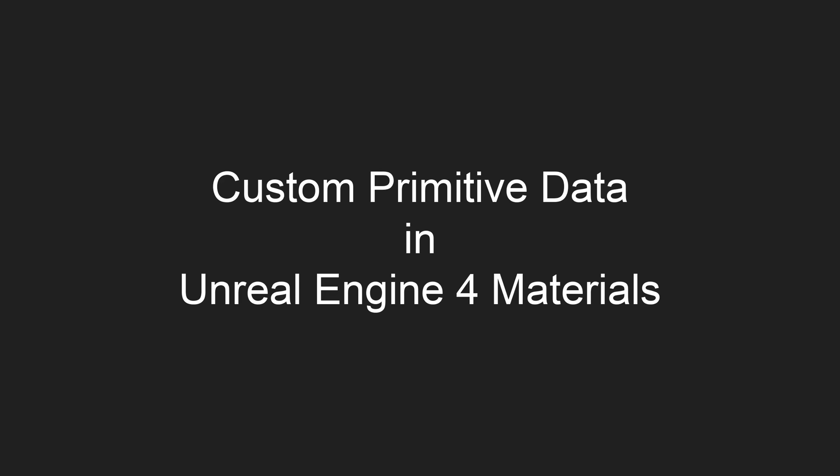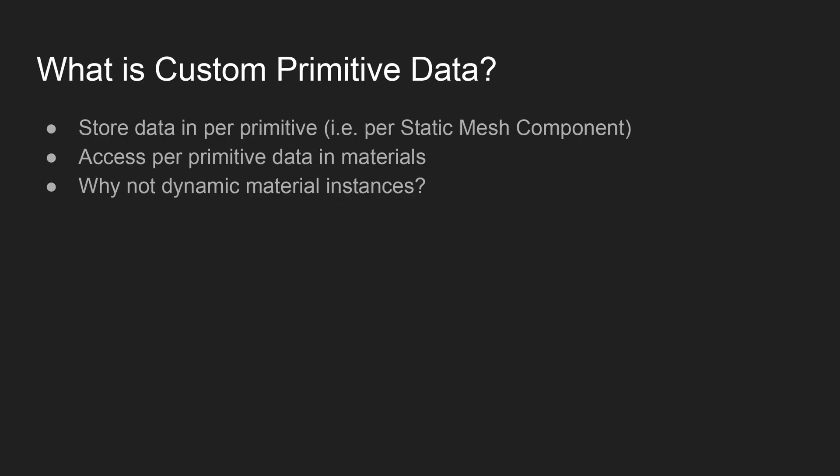This video is about custom primitive data in Unreal Engine 4 materials. This feature is new in Unreal Engine 4.23. Custom primitive data is a feature that allows you to store data in primitives that is used in materials. You could do the same thing with dynamic material instances, but the difference is that you don't create new material instances, which allows the Unreal rendering system to do the same amount of drawing with fewer draw calls.